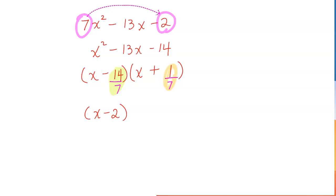But if you look at this, 1 cannot be divided by 7. So what I will do is I will bring that 7 up in front of the x. So my second factor is 7x + 1.